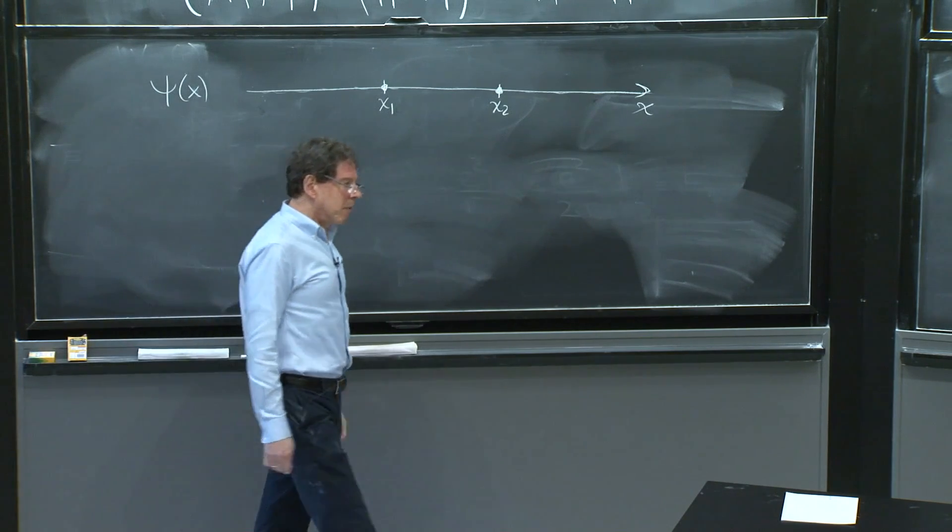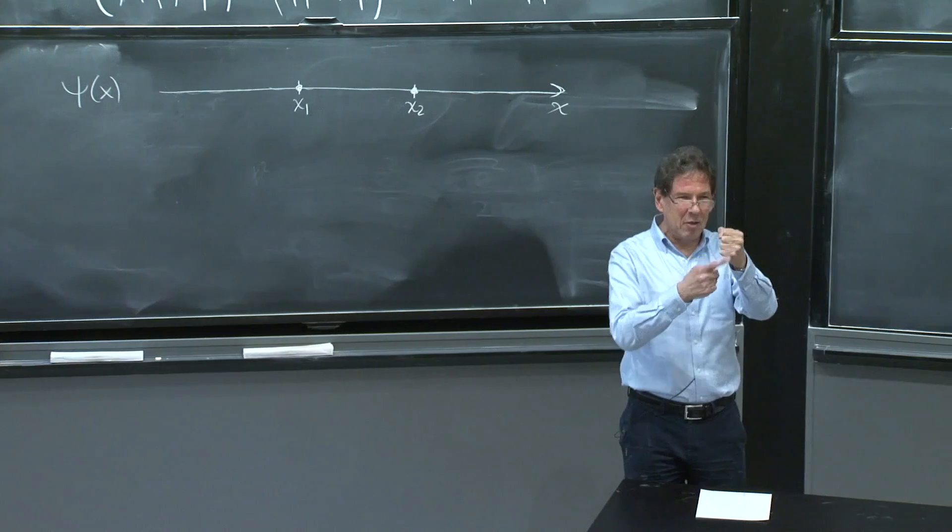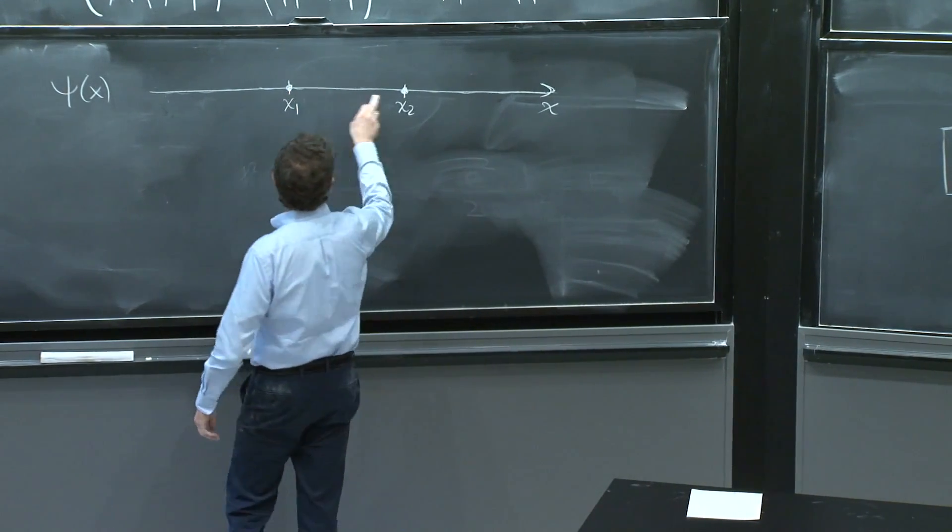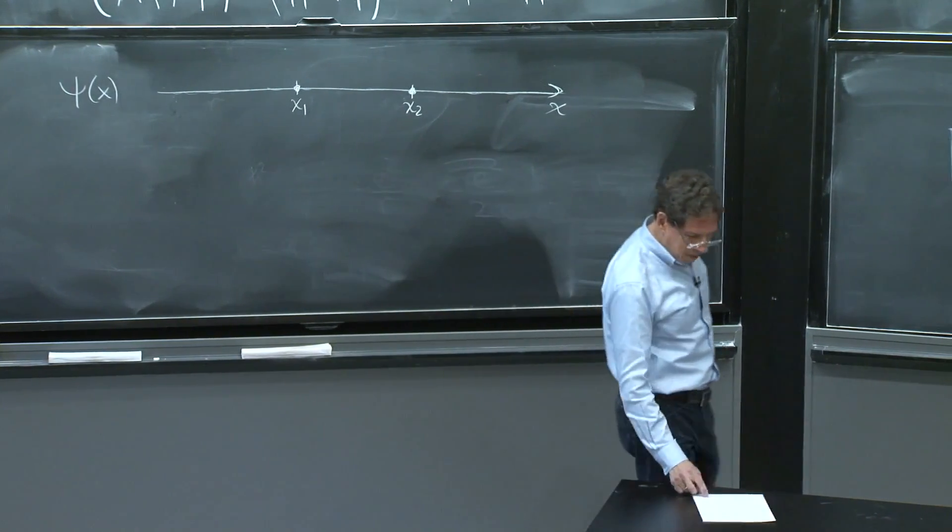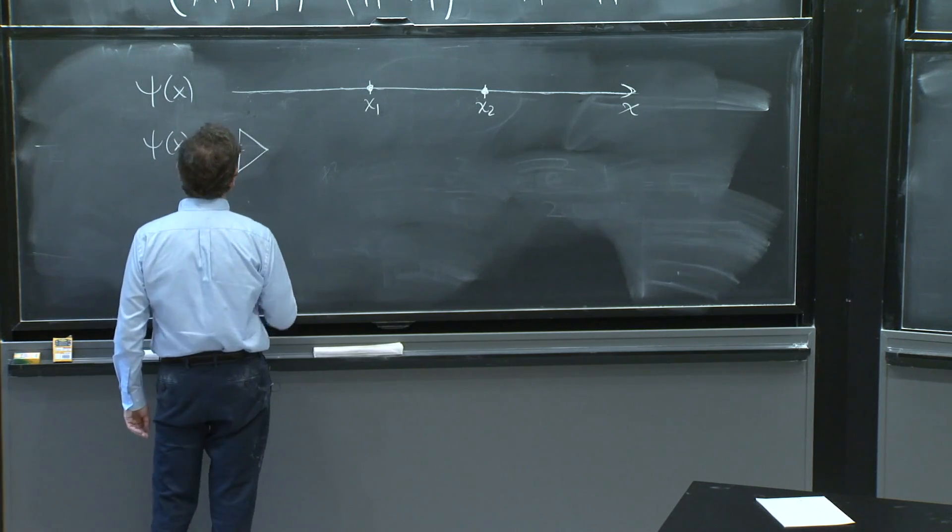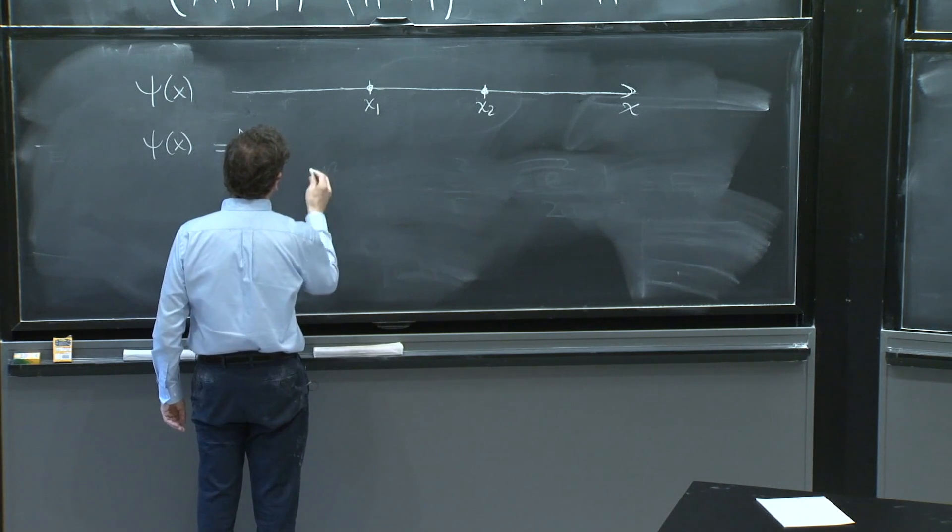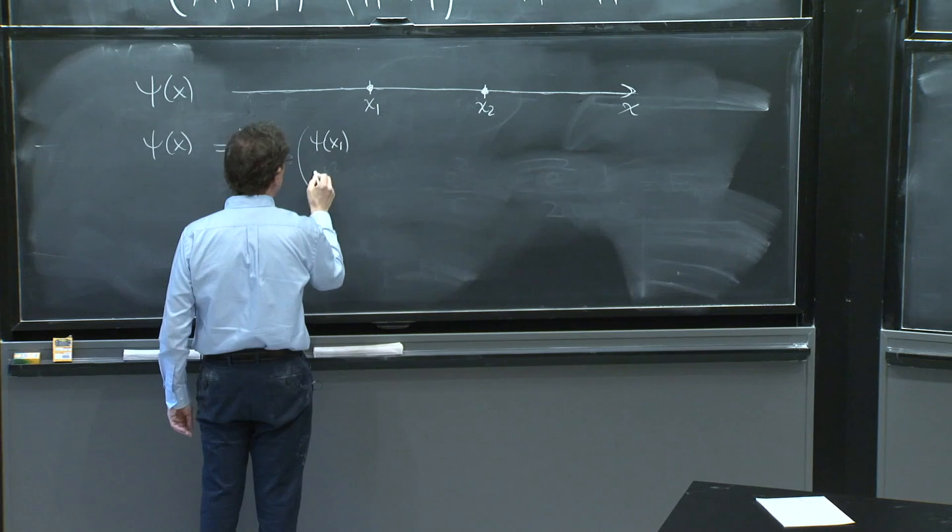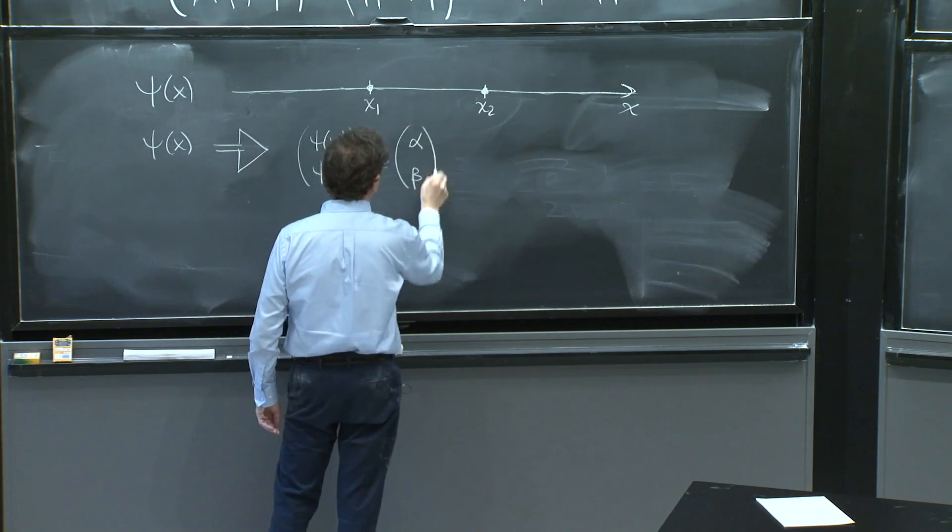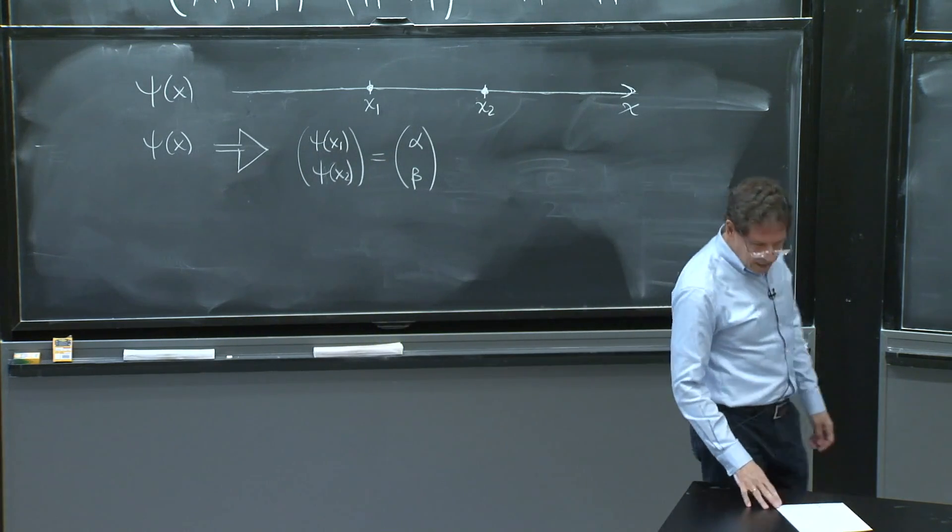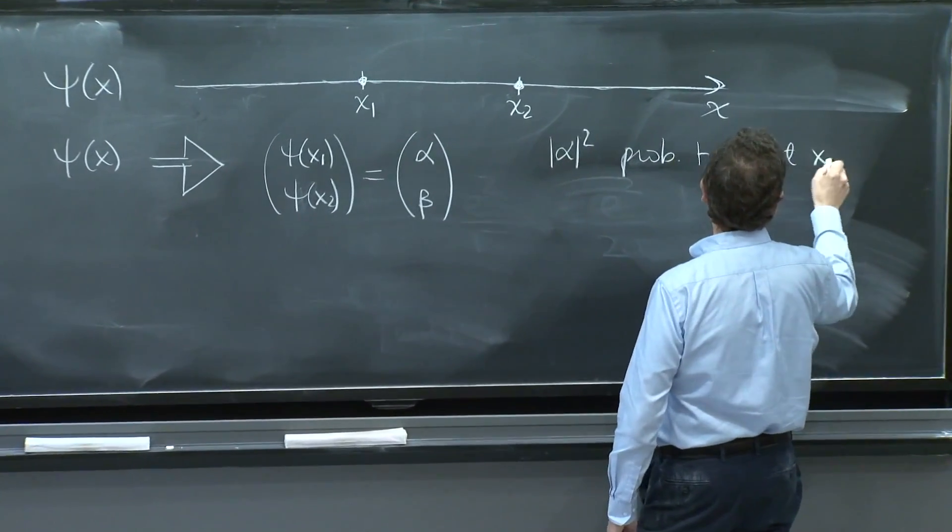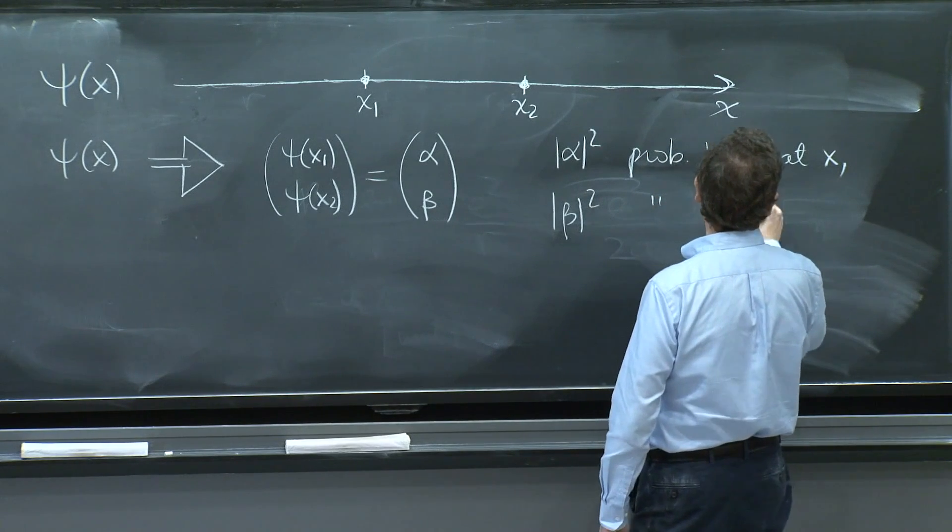But that probably is not too interesting, because the particle is there, the probability to find it there is always one. But if you have two points, there's room for funny things to happen. So we'll assume the particle can be in two points. And from all of this, ψ(x) will go to a new ψ that has two pieces of information: the value of ψ at x₁ and the value of ψ at x₂. Those are two numbers, α and β. |α|² would be the probability to be at x₁, |β|² would be the probability to be at x₂.